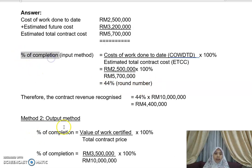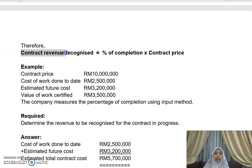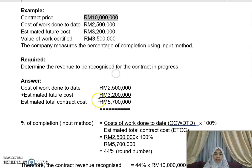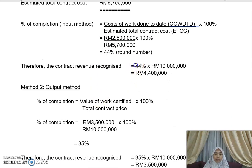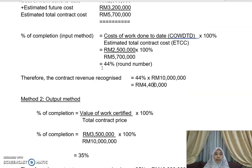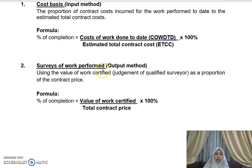To determine the contract revenue to be recognized using method one: 44% × contract price of 10 million = 4.4 million. So 4.4 million is the contract revenue recognized under the input method.